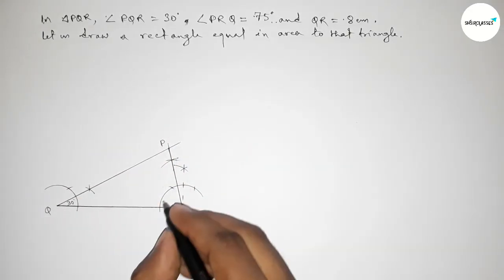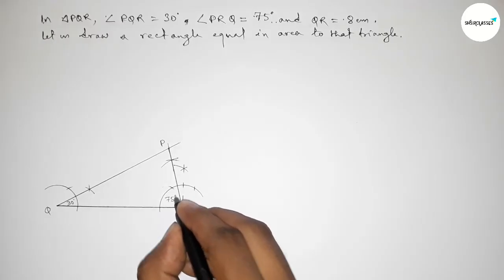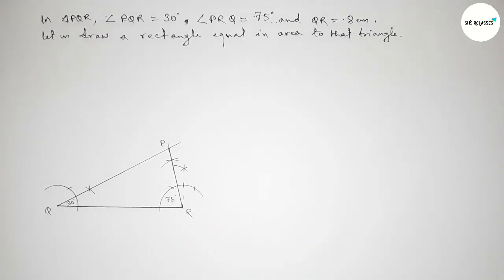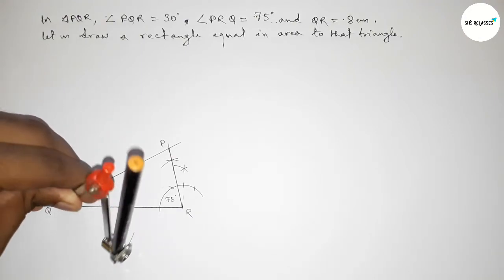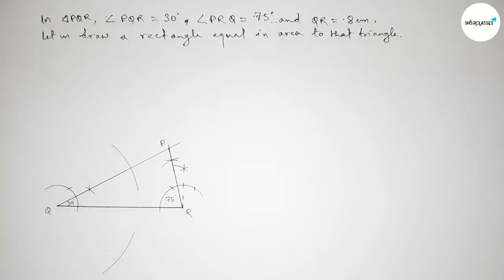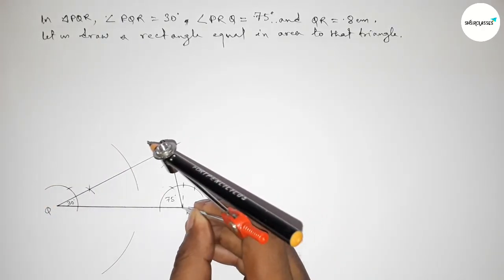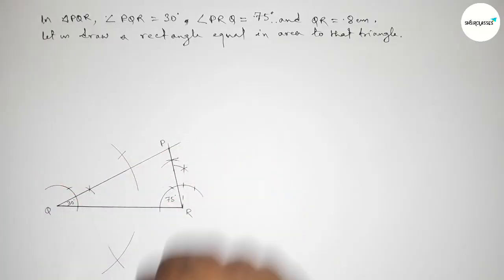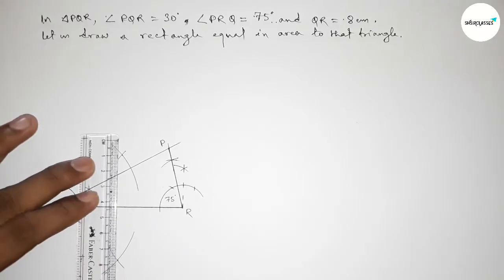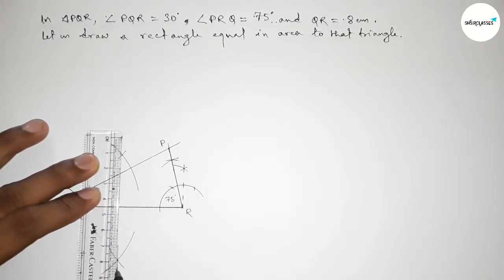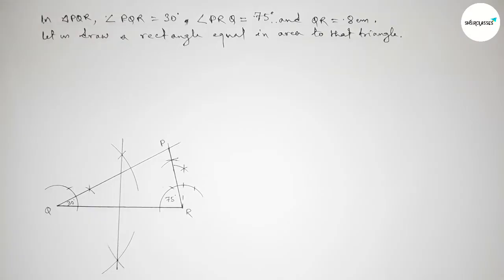We got triangle PQR. This is the 75 degree angle PQR. Next, we have to bisect the line QR. Putting the compass here and taking greater than half of QR, drawing an arc. Putting the compass on R with the same length and cutting here. Both curves intersect at two points — joining this line.